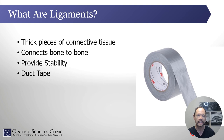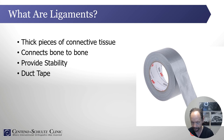So what are ligaments? They're basically thick pieces of connective tissue that connect bone to bone. They provide critical stability throughout the body, and in the thoracic spine they provide stability for the spine. You can think of ligaments as human duct tape.